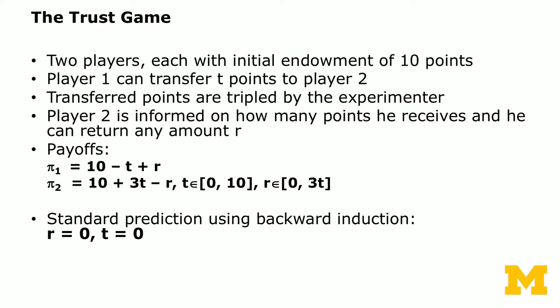Player one can transfer T points to player two. The transfer points are tripled by the experimenter before they reach player two. Player two is then informed how many points he receives, and he can return any amount R.